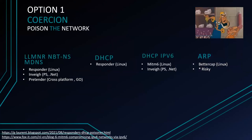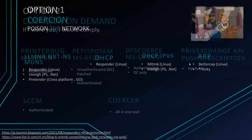Now we're going to talk about coercion. The first option is what we call poisoning the network. The classic one that pretty much everyone knows is LLMNR and NBT-NS. You can poison that with tools such as Responder for Linux and Inveigh for Windows. There's a new tool called Pretender, written in Go and cross-platform, though I haven't had the chance to try it. You can also poison DHCP offers and inject malicious WPAD or DNS. You can do rogue DHCP IPv6 with mitm6 and Inveigh. And there's also an old-school method called ARP poisoning — you have to be careful with that one because it's riskier and could crash the network, so it's better to target only one host at a time.